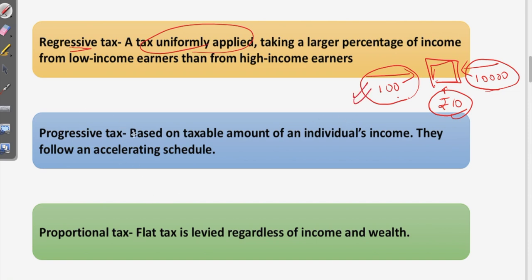The second type is progressive tax, which is based on the taxable amount of an individual's income. Progressive taxes follow an accelerating schedule — when your income rises, your tax liability also rises. The example of this is direct income tax.